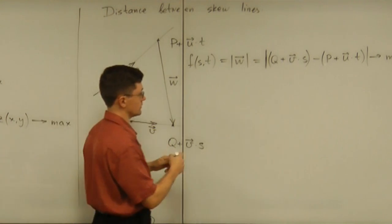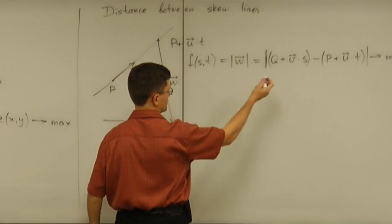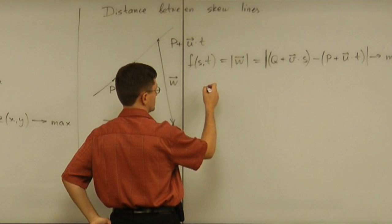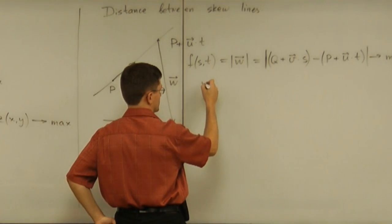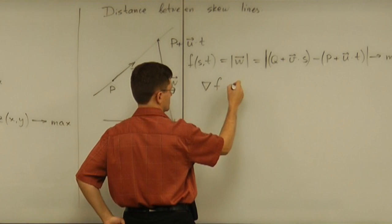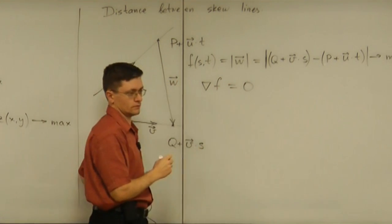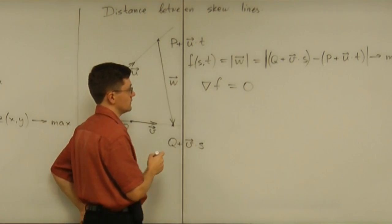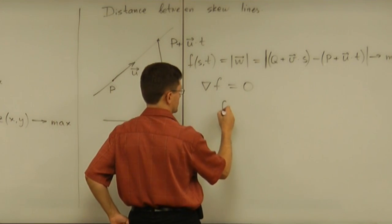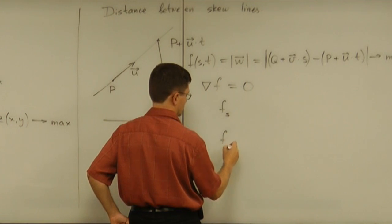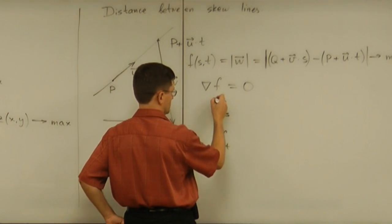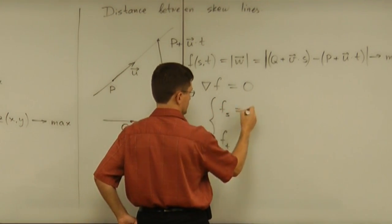And now, we know the procedure. Right? We look for the critical point. So, we say that the gradient of f has to be zero. And that means the partial of f with respect to s and the partial of f with respect to t both have to be zero simultaneously.